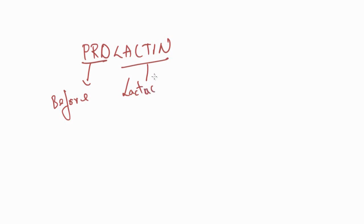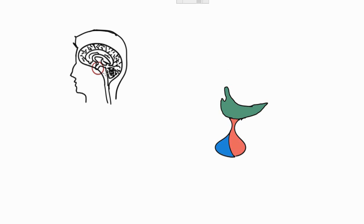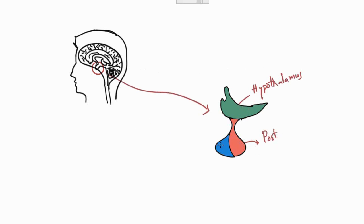Prolactin is produced before lactation. If you look at the cross-section of the human brain, the pituitary gland is located in this particular region. The green part is the hypothalamus, the posterior part is the posterior pituitary gland, and the anterior pituitary gland is where prolactin is produced.